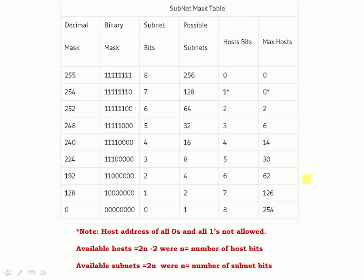What you'll find very useful to create is a subnet mask table, and here's an example one here. You can download this off the site, just copy the image, or create your own — there are lots of these tables on the internet if you do a quick search. Basically, it makes calculating subnets, number of host bits, and mask bits very, very easy. You can see here, let's just take an example.